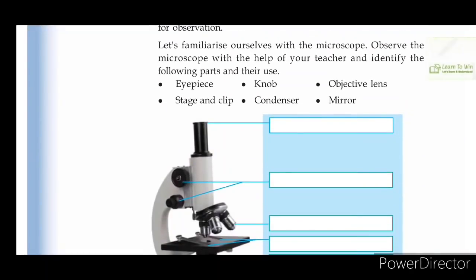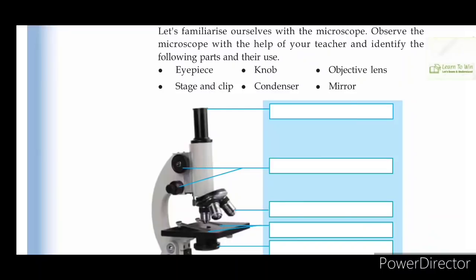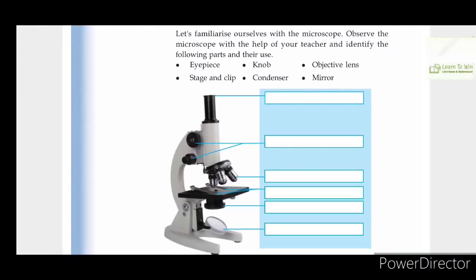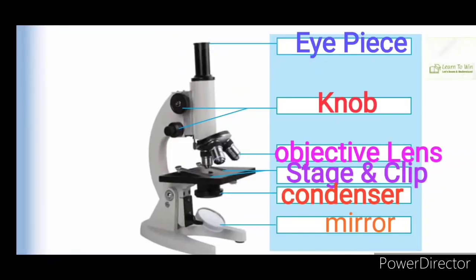Let's familiarize ourselves with the microscope. Observe the microscope with the help of your teacher, and identify the following parts and their uses. This is the microscope. The first part is the eyepiece, the second is the knob, the third is the objective lens, the fourth is the stage clip, and there is also the condenser and mirror.